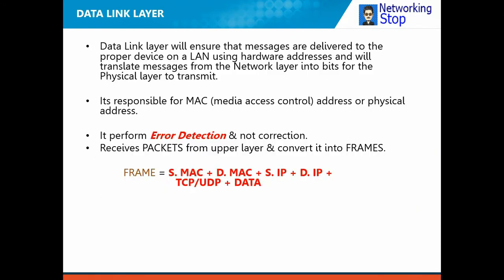The packets are then received at the data link layer. The data link layer adds the source MAC address and the destination MAC address, converting them into something we call frames. So the equation is: source MAC address plus destination MAC address plus source IP plus destination IP plus TCP/UDP plus port numbers equals a frame. Switches are located at the data link layer.